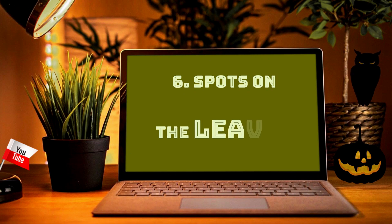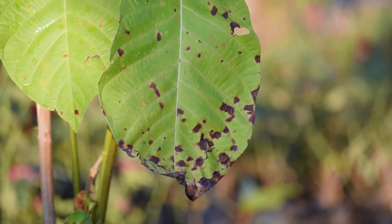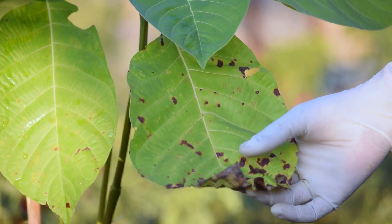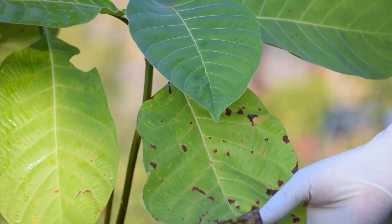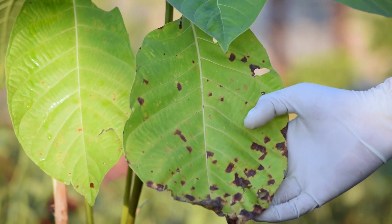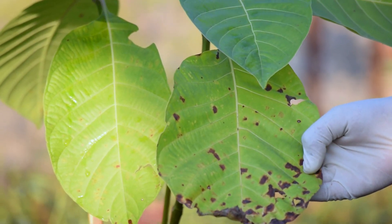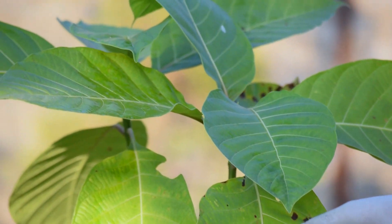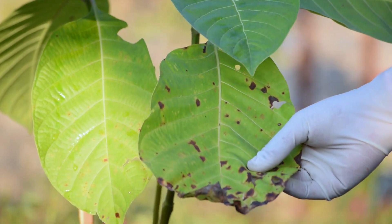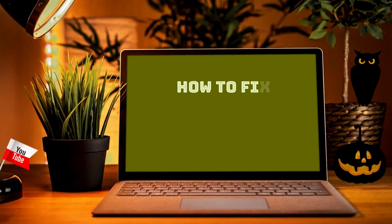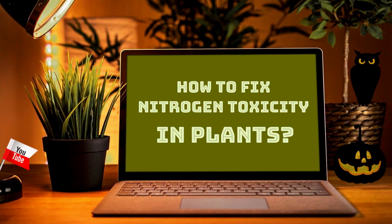Number six: spots on the leaves. Nitrogen toxicity leads to nutrient burn, which stresses out the plant. To compensate, the plant tends to absorb more water than needed, worsening the toxicity. Prolonged conditions lead to spots on foliage, hence killing the plant.